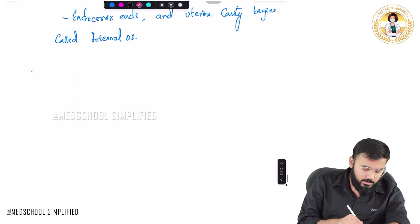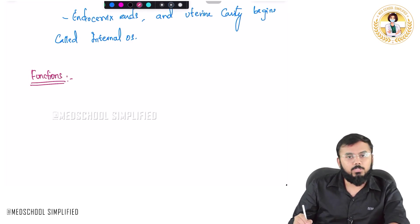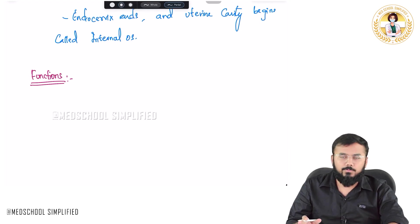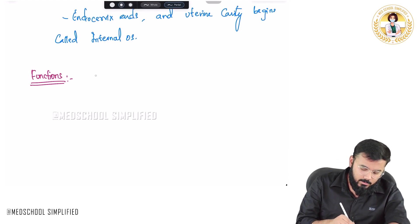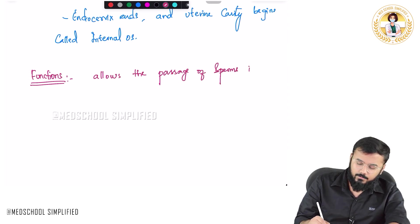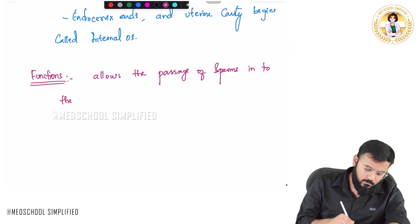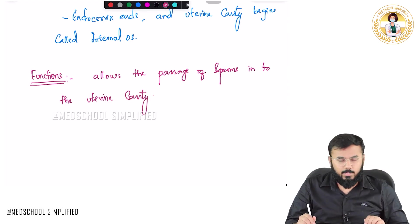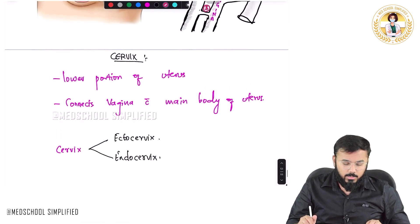When you look at the functions of the cervix, the most important function you need to know is that it allows the passage of sperms into the uterine cavity. This is all you need to know regarding the cervix. Thank you so much for watching.